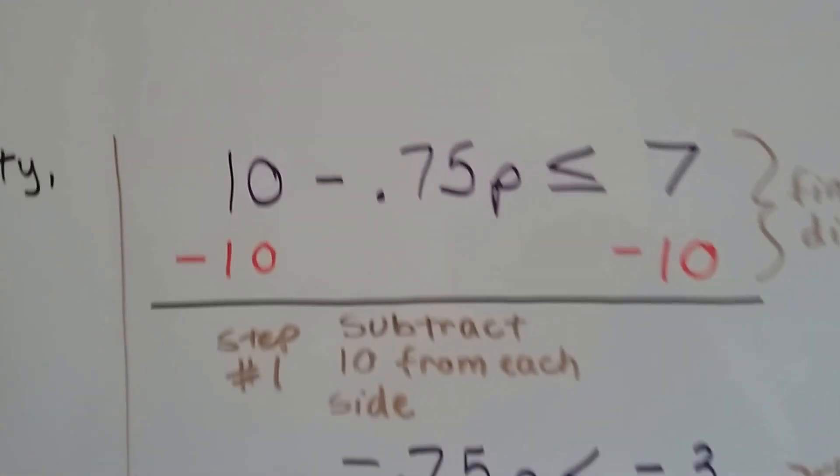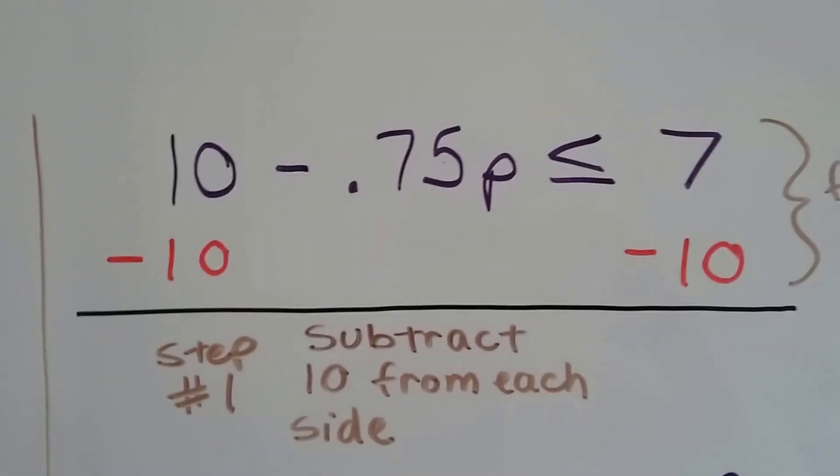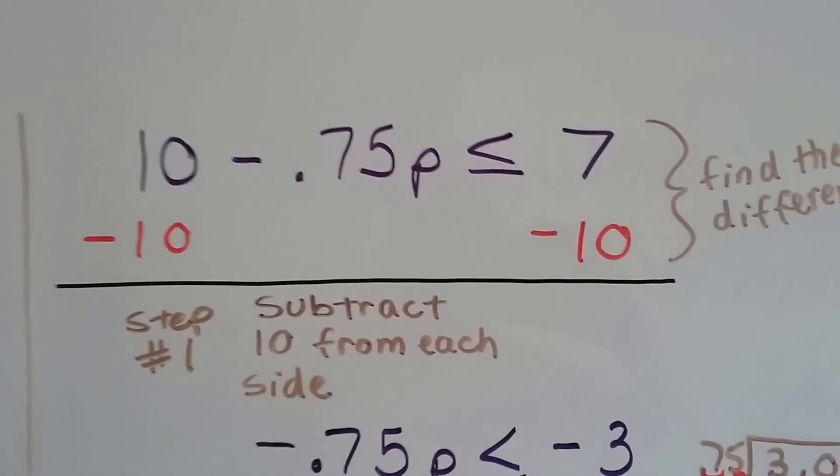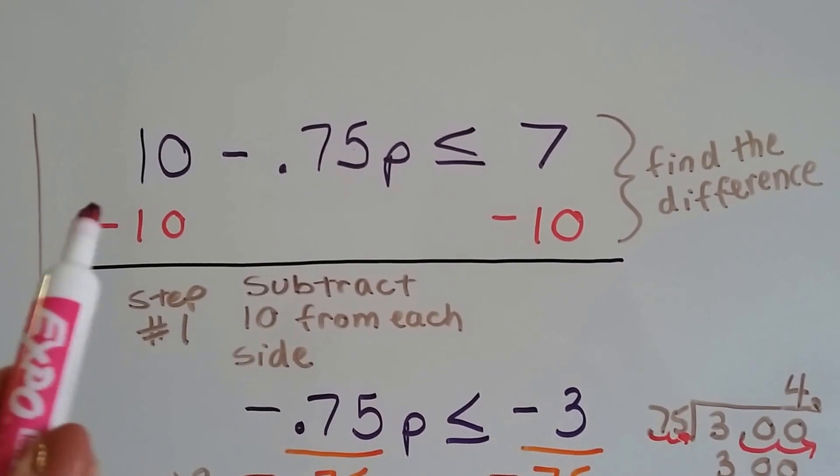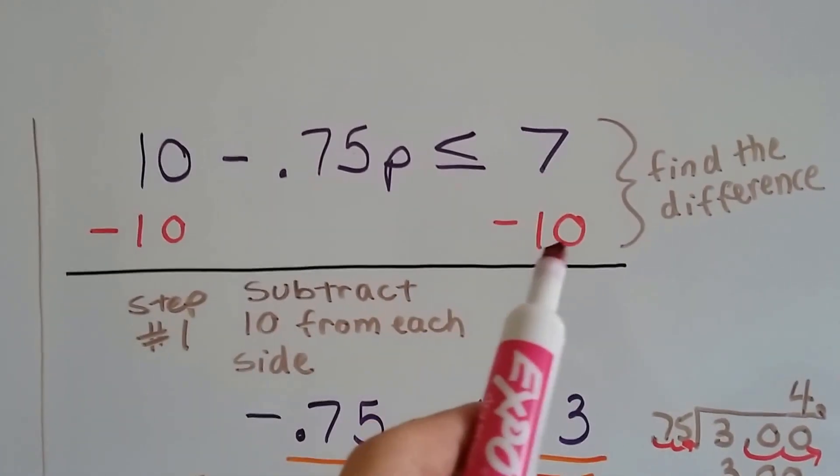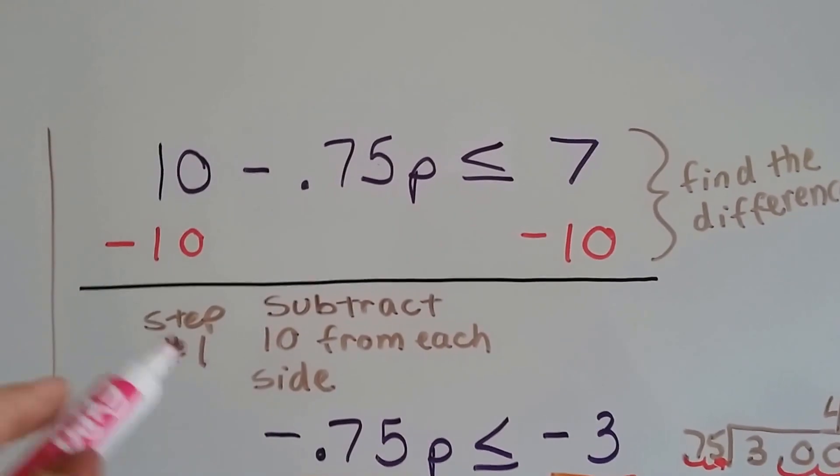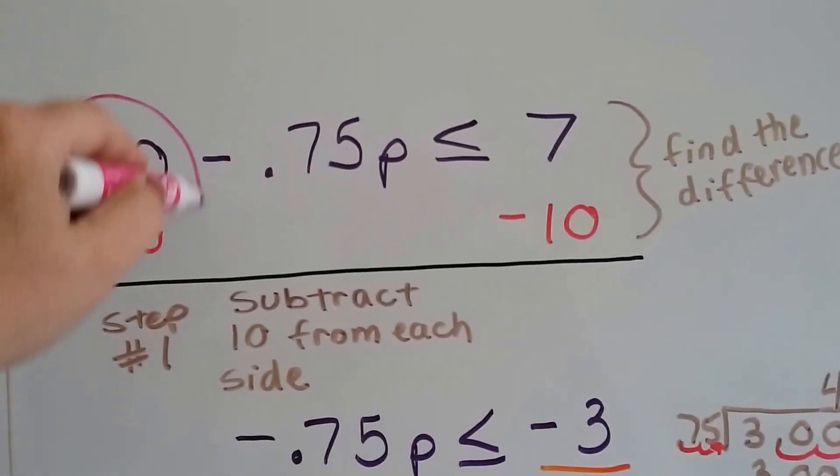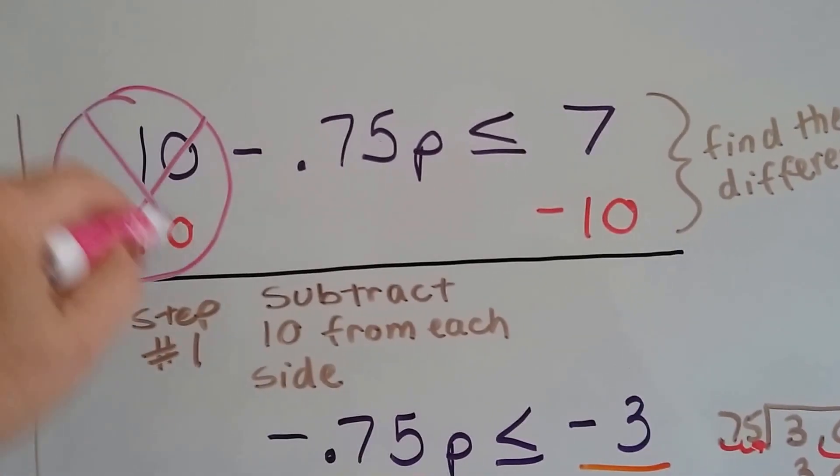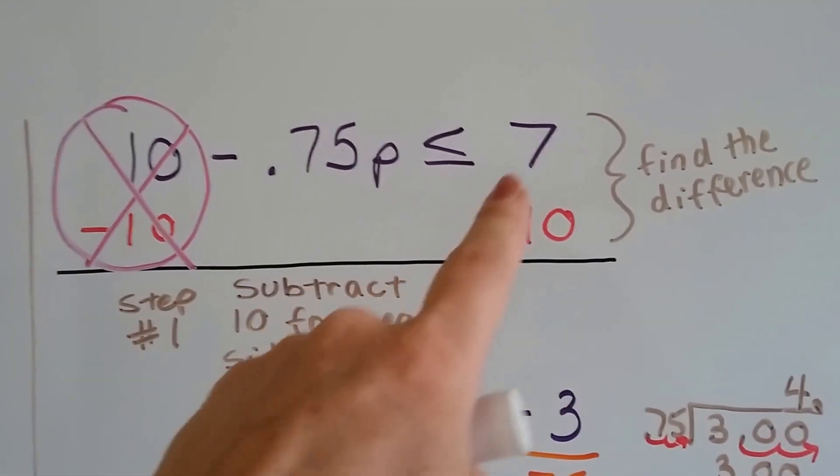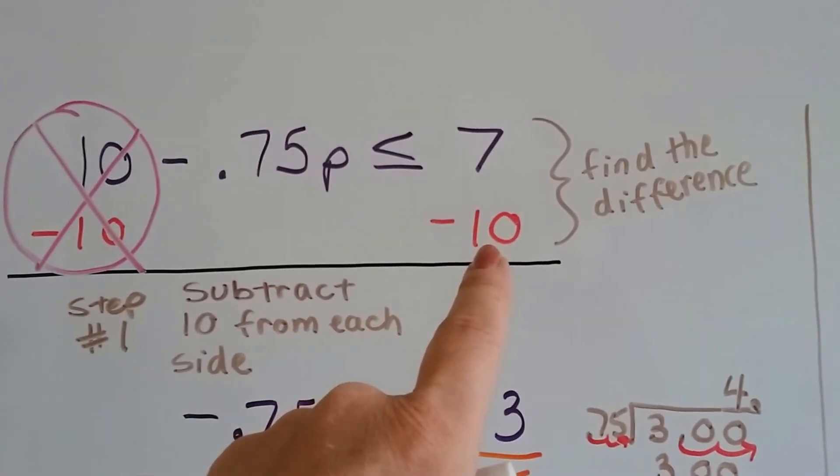Let's take a look at this. We have 10 minus 0.75p is less than or equal to 7. We need to find the difference between 7 and minus 10 when we take 10 away from both sides. We start here, we create a zero pair, so that we've just got negative 0.75p on this side, and 7 minus 10.